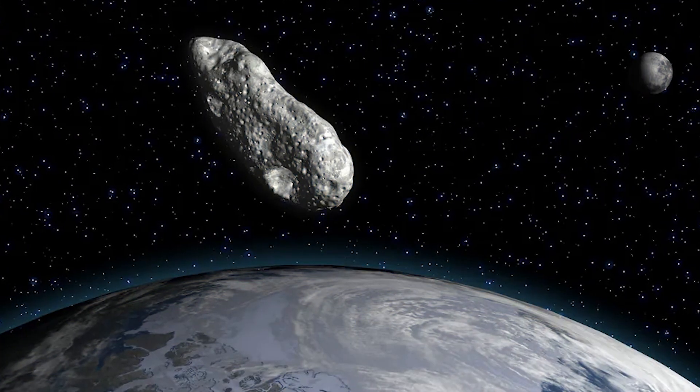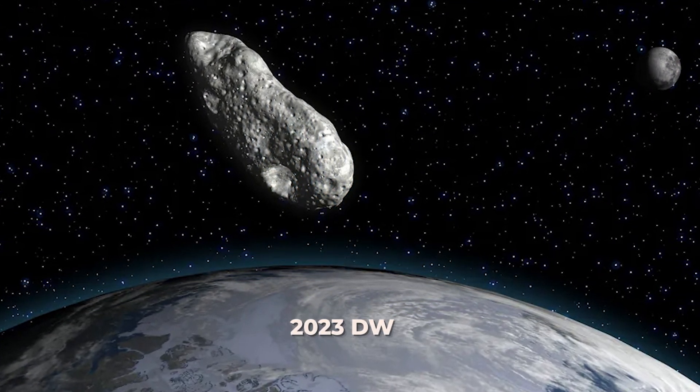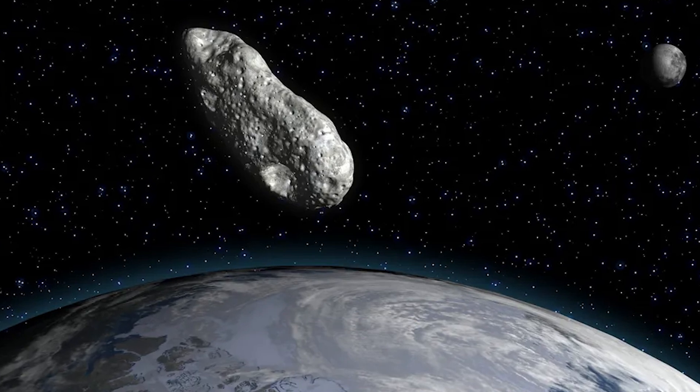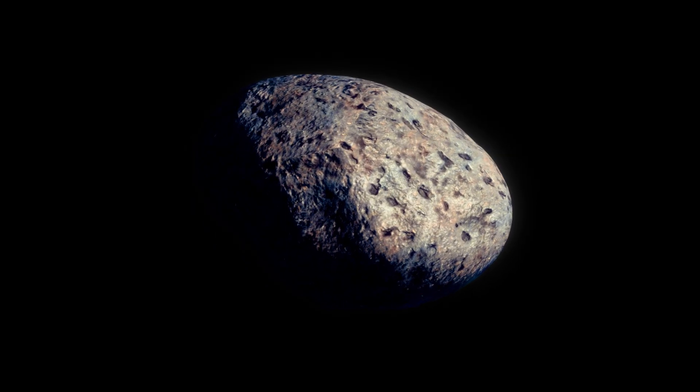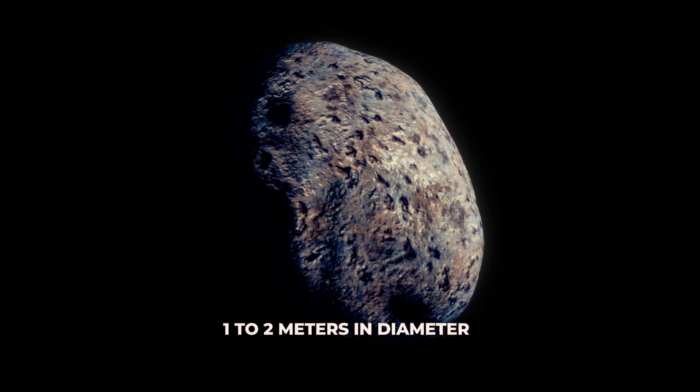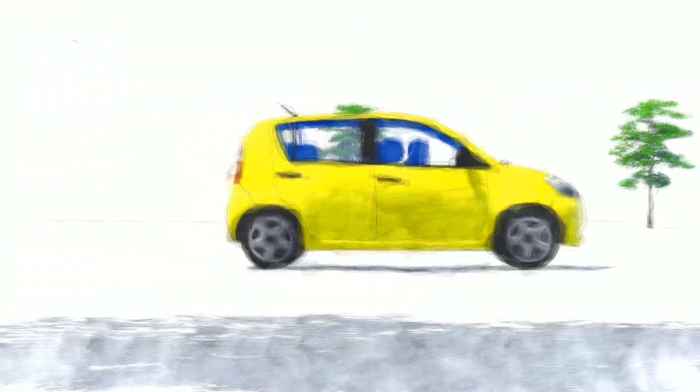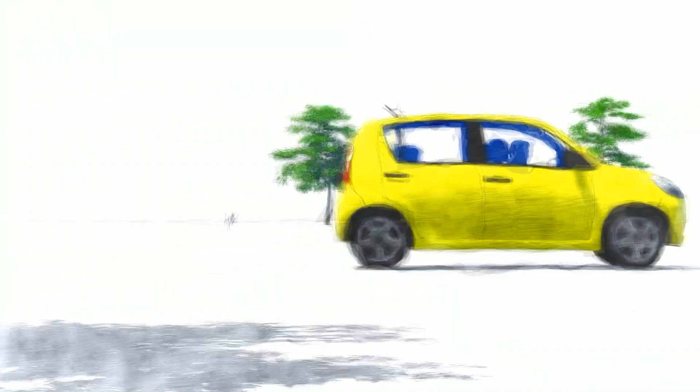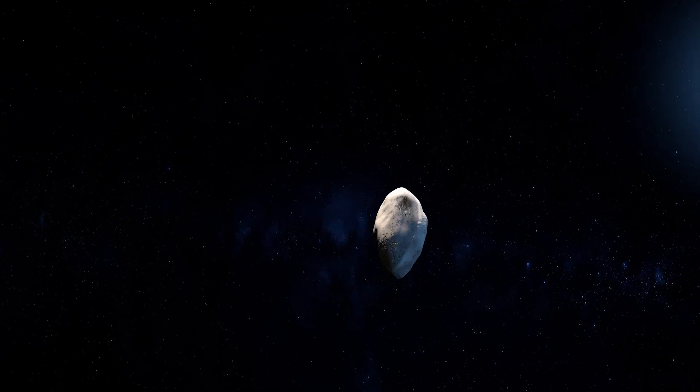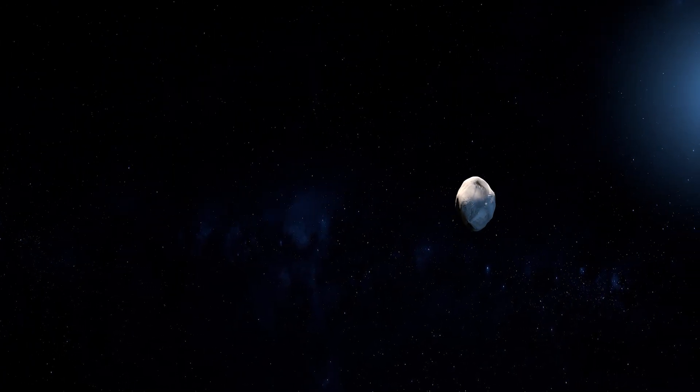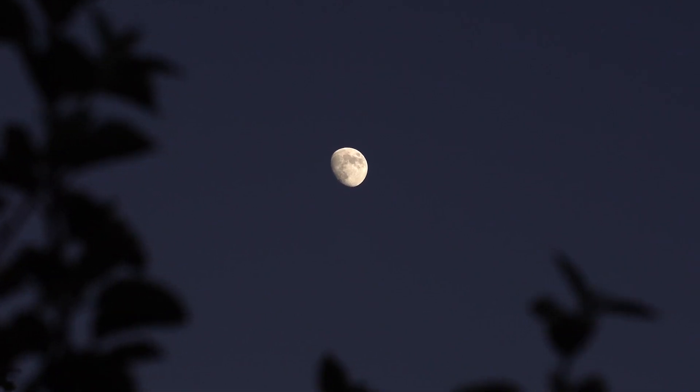Our new mini-moon, officially designated as 2023-DW, is believed to be an asteroid about 1 to 2 meters in diameter. To put that in perspective, it's roughly the size of a small car. So, while it might be called a moon, it's not something you'd see lighting up the night sky.